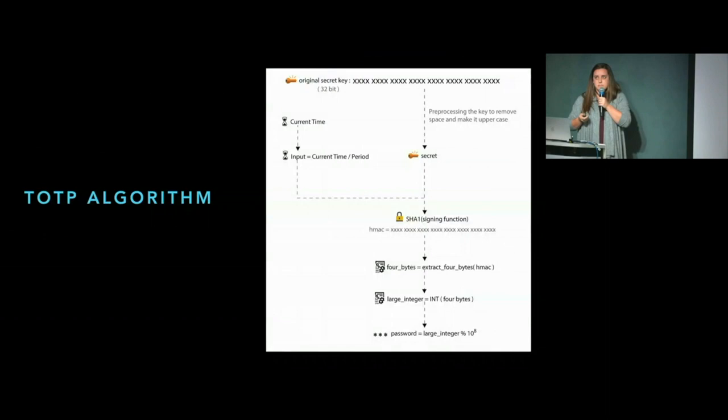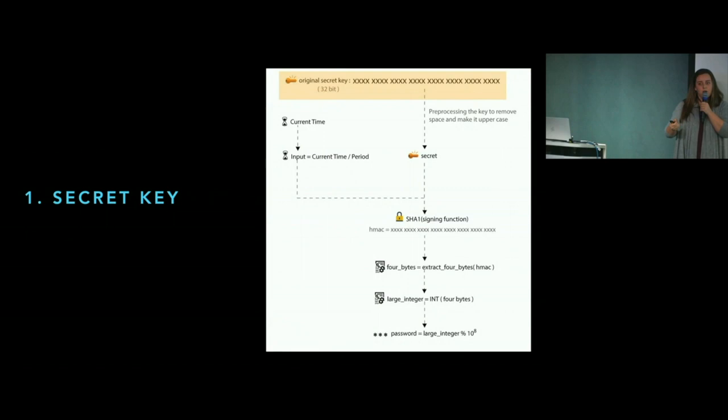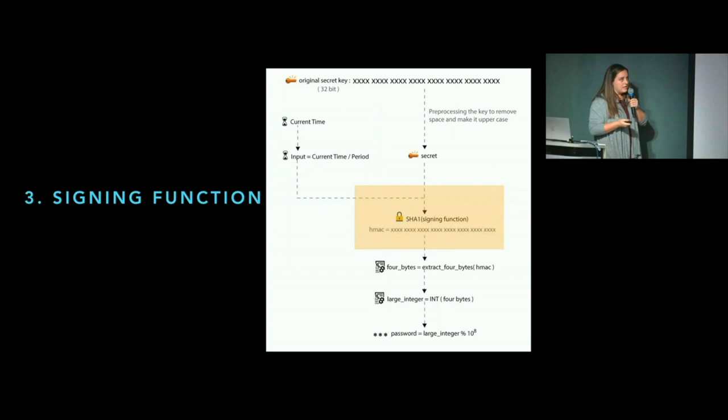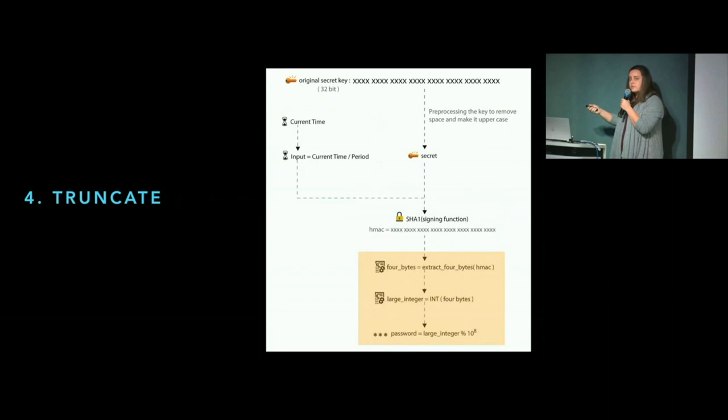How does the TOTP algorithm work? You're going to start with a secret key — this is what happens when you scan that QR code. You get the secret key onto your device so that the server and your device both have that secret key. You're going to use the current time, and this is normalized into a time period so that you can use that code for more than just a microsecond. You combine those, put them through a signing function, get a hashed value out. Then you truncate that and turn it into an integer value — usually six or seven digits — that you as the user can type into the app.